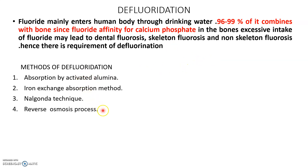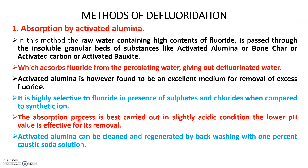There are various methods for defluoridation. The first is absorption by activated alumina, then ion exchange process, Nalgonda technique, and reverse osmosis. For absorption by activated alumina, water is passed through a granular bed of activated alumina, bone char, activated carbon, or activated oxide. When you percolate the water through those beds, the water comes out defluoridated — defluoridation takes place.